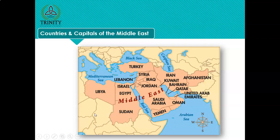You can see there's Libya, Sudan, Egypt, Lebanon, Jordan, Syria, Iraq, Turkey, Saudi Arabia, Yemen, Oman, Iran, Kuwait, Bahrain, Qatar, the United Arab Emirates and Afghanistan. So not as many countries and capitals to memorize as in Africa, but it certainly gets us going.